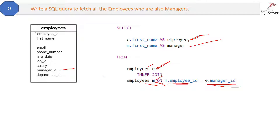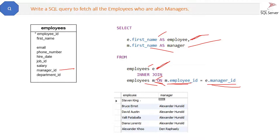Logically, we are breaking this one table into two tables — one for employees and one for managers — and then joining them to get the first name of the employee and the first name of the manager. The result will show the employee's first name and their corresponding manager's first name.